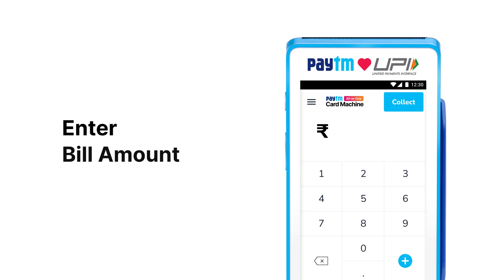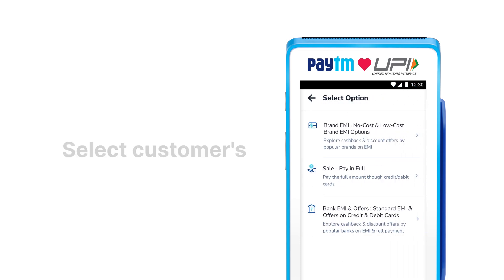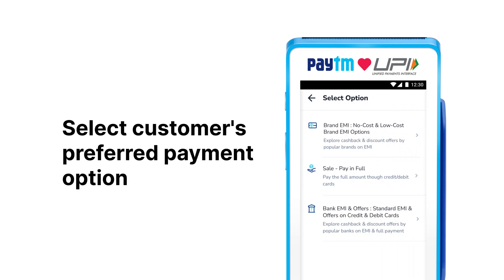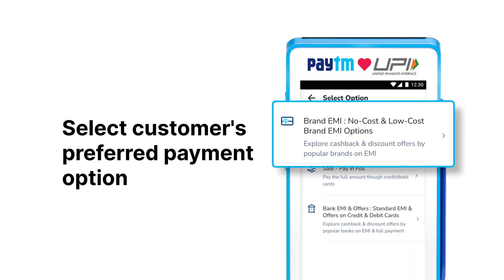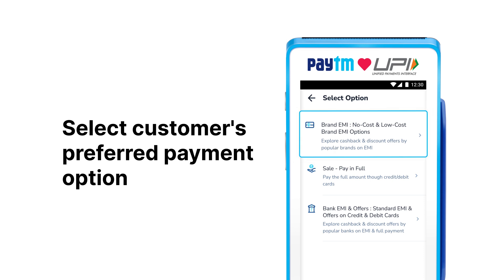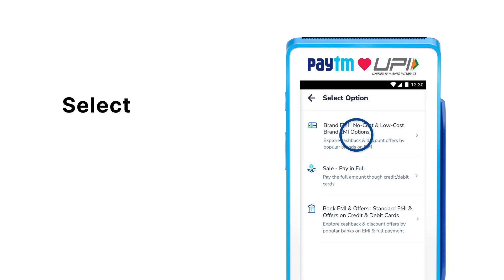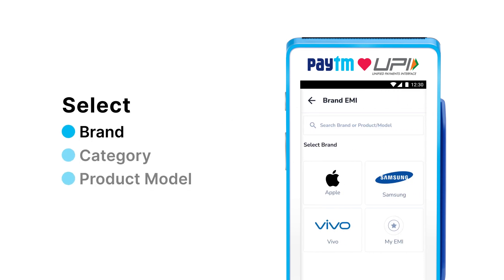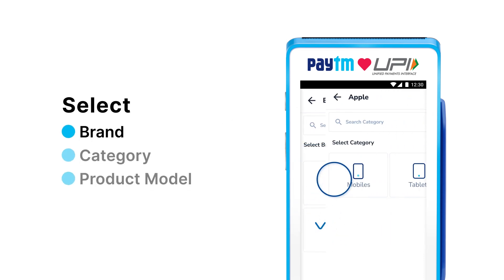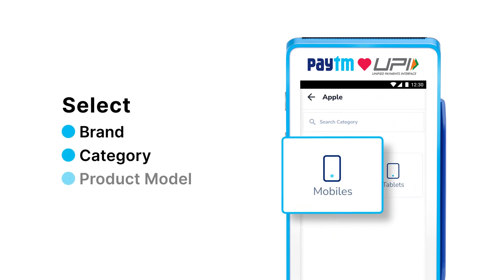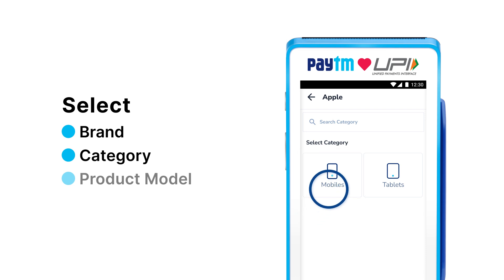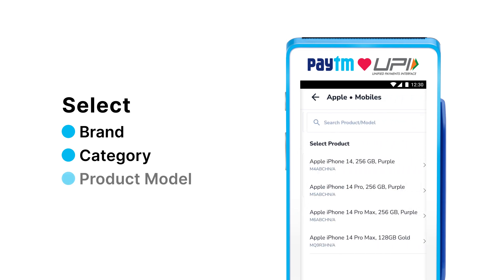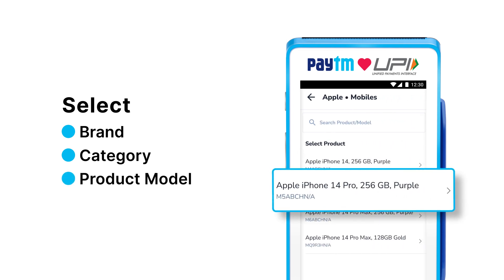Enter the bill amount. Select customer's preferred payment option. Select brand, category and product model.